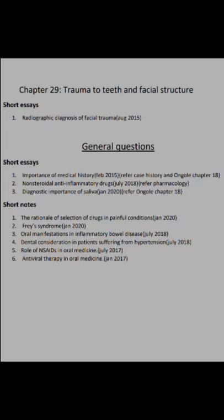For rational selection of drugs in painful conditions — a postgraduate-level question asked as a short note — write a point or two from the pharmacology section of Burkett. Give examples of medications used for dental pain, and comment on fast pain (A-delta fibers) and slow pain (C fibers), noting what kind of drugs can be used for each type of pain.